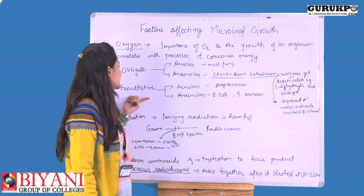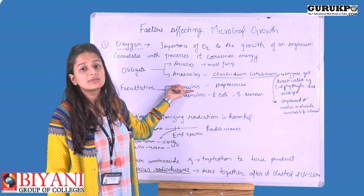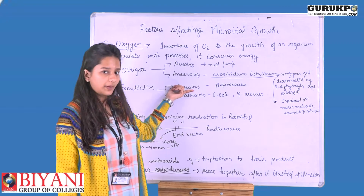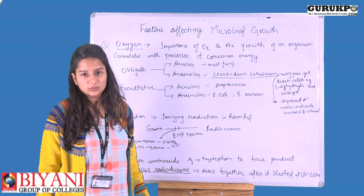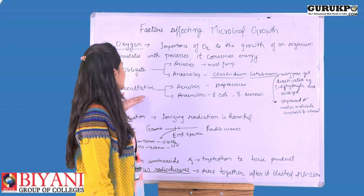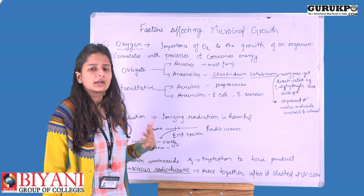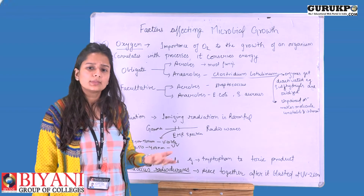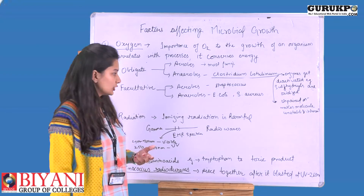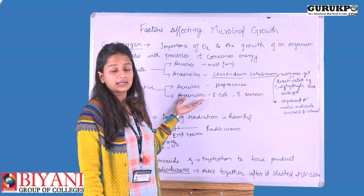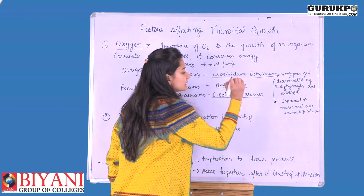The second category is facultative. Facultative aerobes are organisms which can live in the presence or absence of oxygen. An example is Streptococcus. Facultative anaerobes also survive whether anaerobic or aerobic conditions are present — they can grow in both. Examples include E. coli and S. aureus.